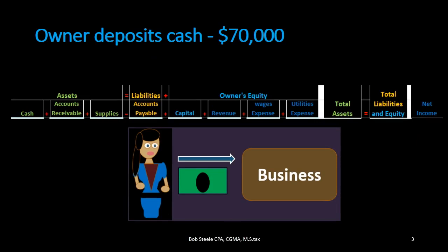We're going to list through these transactions and record them with the accounting equation, learning these accounting equations using our normal rules and thought process. This is our accounting equation — assets, liabilities, and equity. When we record transactions using the accounting equation we use the accounts involved; this is sometimes called an extended accounting equation. It's useful to start recording transactions in this format and then later move to debits and credits, since it's an equation and everyone has some experience with equations. However, as you can see, it does get a bit complex, and it's much easier with debits and credits.